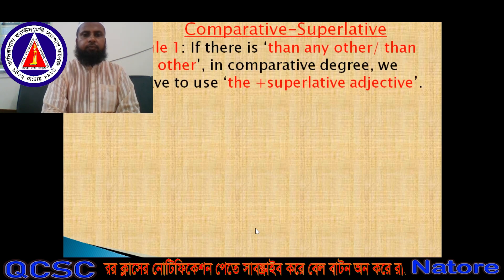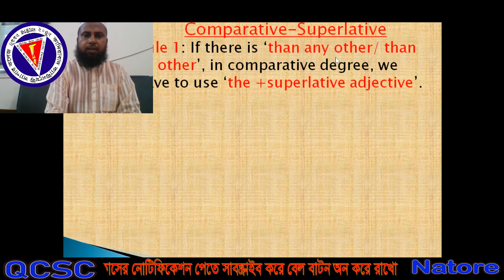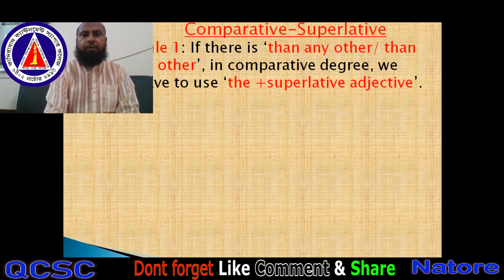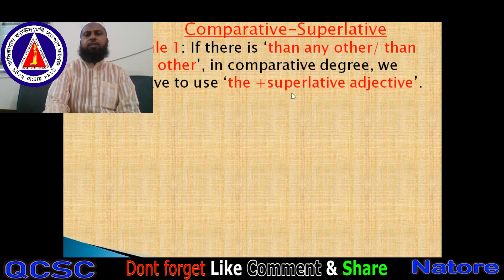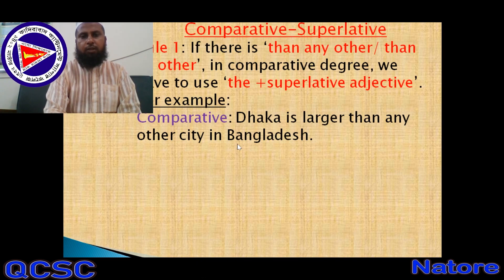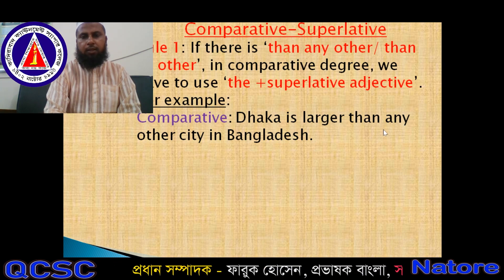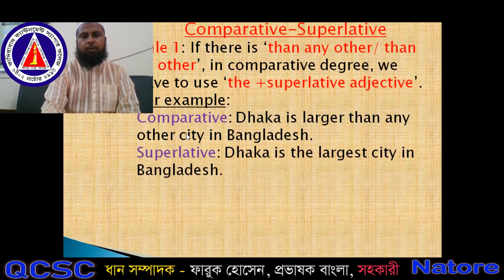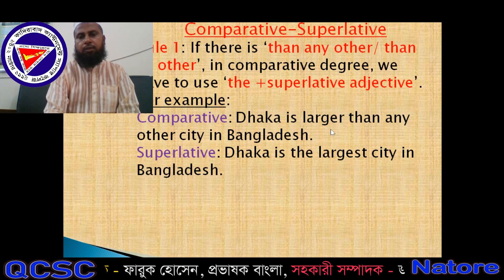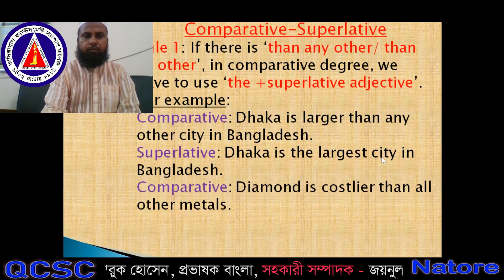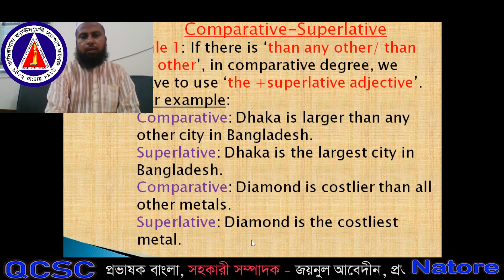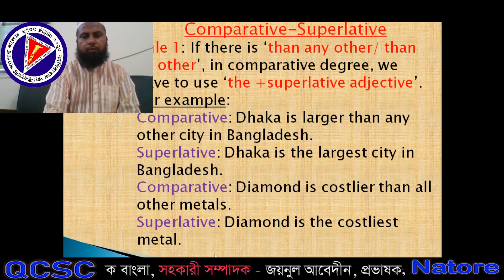Now comparative to superlative. Rule number one: if there is 'than any other' or 'than all other' in the comparative degree, we have to use 'the + superlative adjective.' Example: 'Dhaka is larger than any other city in Bangladesh.' There is 'than any other' and the noun is singular. So the superlative should be: 'Dhaka is the largest city in Bangladesh.' Another example: 'Diamond is costlier than all other metals.' Here 'than all other,' and the answer should be: 'Diamond is the costliest metal.'